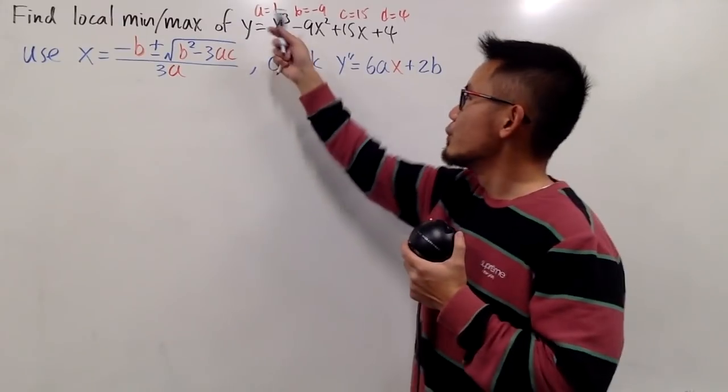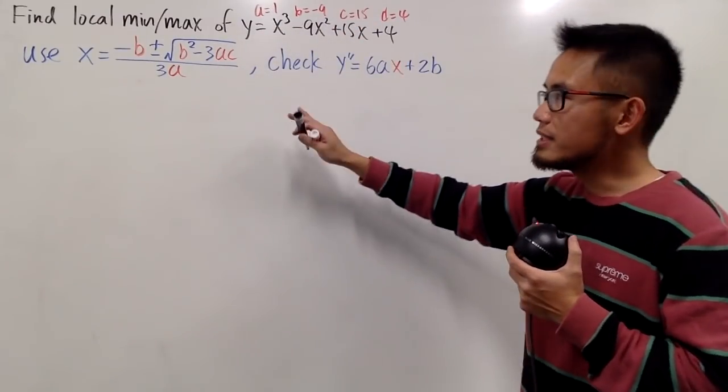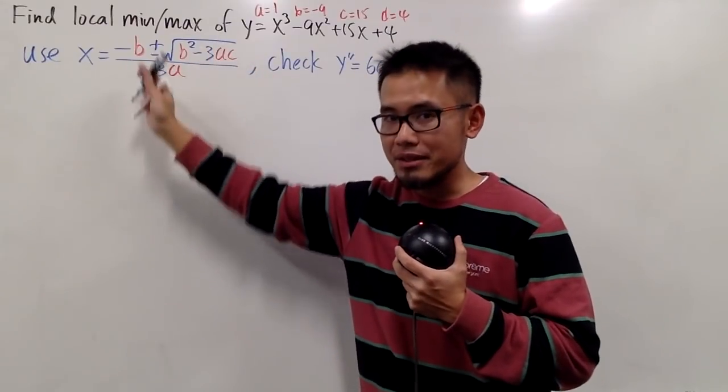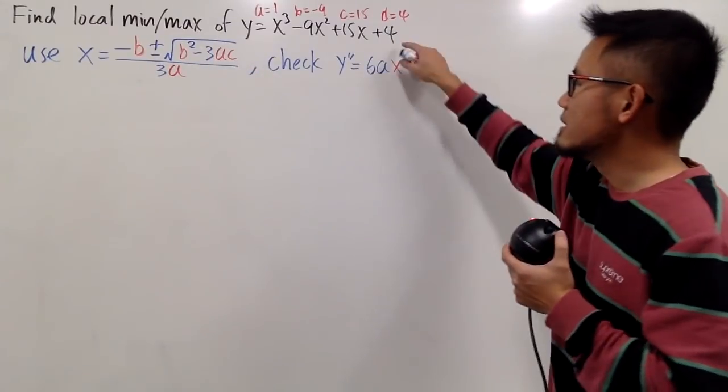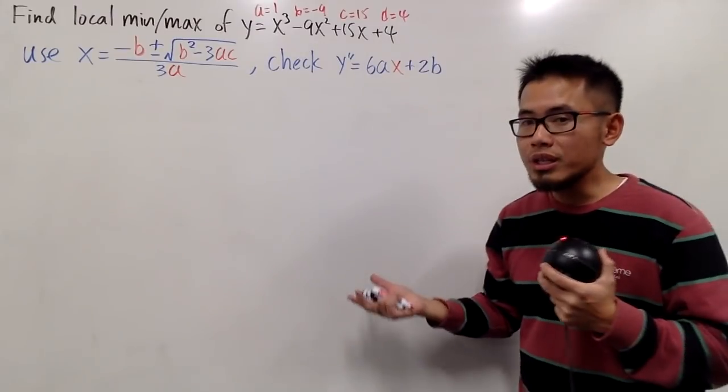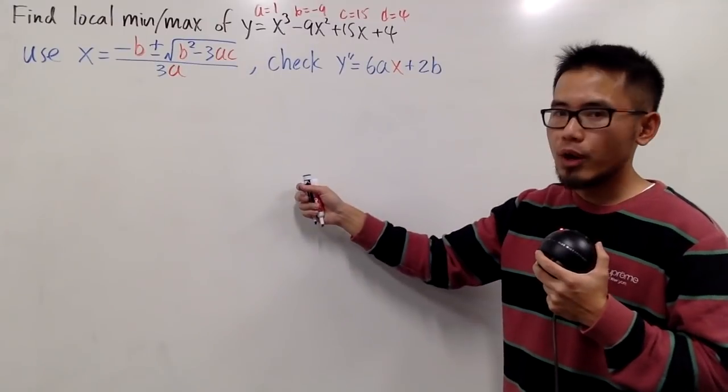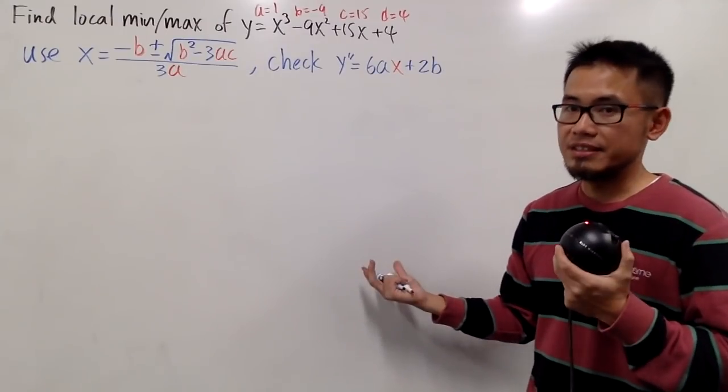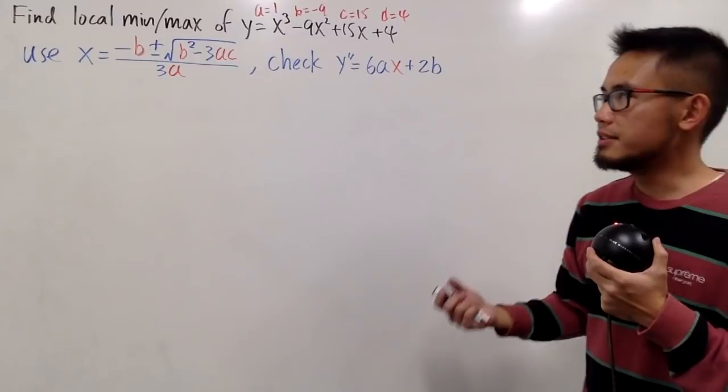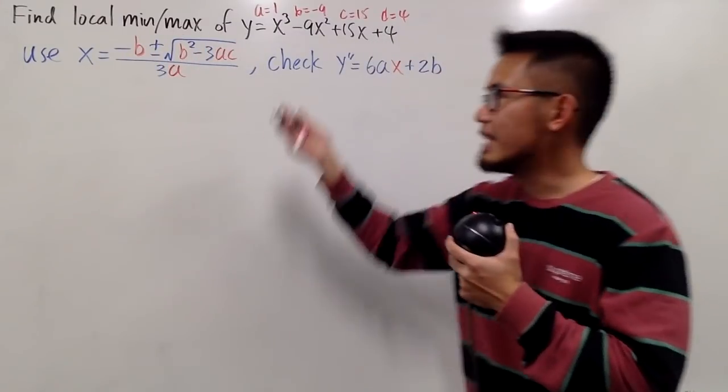So all we need is the ABC values, which we can just throw in. Notice that the D value doesn't matter in this formula, because if you have a different D value, all you're doing is bringing the curve either up or down. But the X value of the vertices will stay the same, and those vertices are exactly the local minimum or the local maximum, if there's any in the first place.